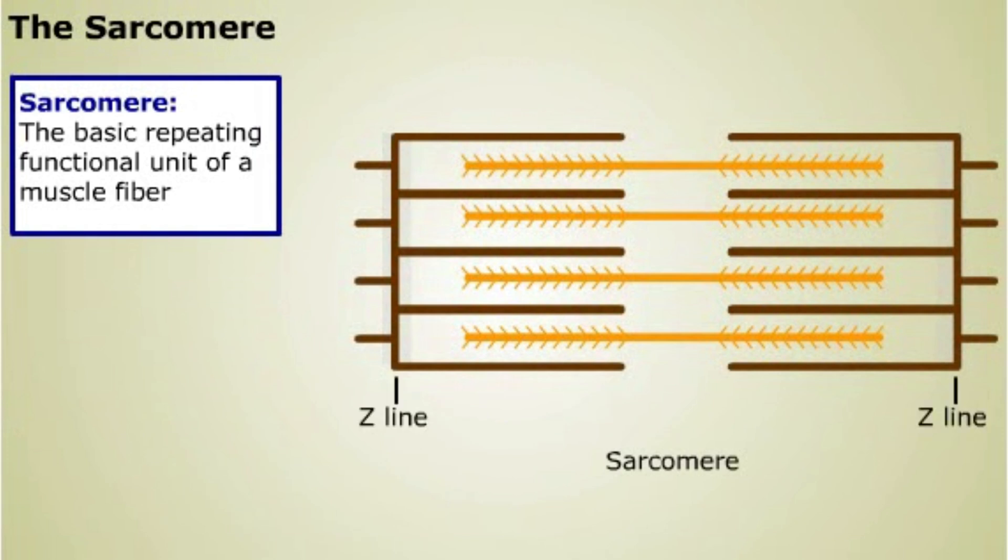The borders on each side of a sarcomere are called Z-lines. Only thin filaments attach to the Z-lines. Between two thin filaments is a thick filament centered within the sarcomere. The length of the thick filament is called the A-band.